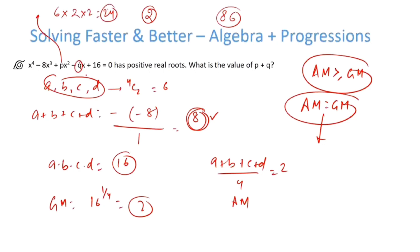q is product taken 3 at a time, so 4C3 equals 4, times 3 roots: 2 times 2 times 2, that becomes 32.